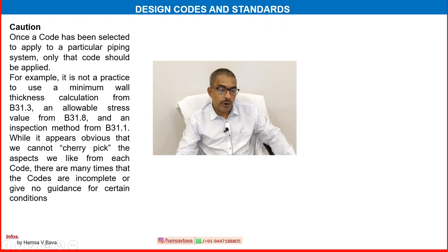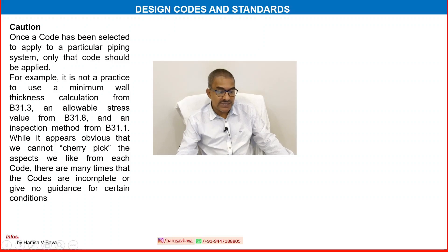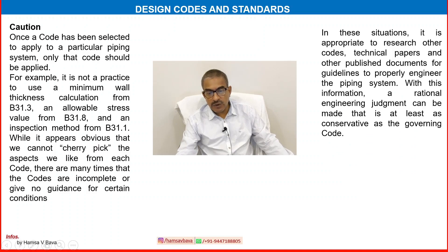Caution! Once a code has been selected to apply to a particular piping system, only that code should be applied. For example, it is not acceptable practice to use a minimum wall thickness calculation from B31.3, an allowable stress value from B31.8, and an inspection method from B31.1. While it appears obvious that we cannot cherry-pick aspects from each code, there are many times that codes are incomplete or give no guidance on certain conditions. In these situations, it is appropriate to research other codes, technical papers, and other published documents for guidelines to properly engineer the piping system, so that a rational engineering judgment can be made that is at least as conservative as the governing code.